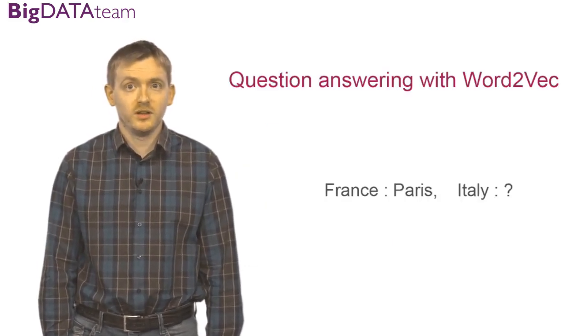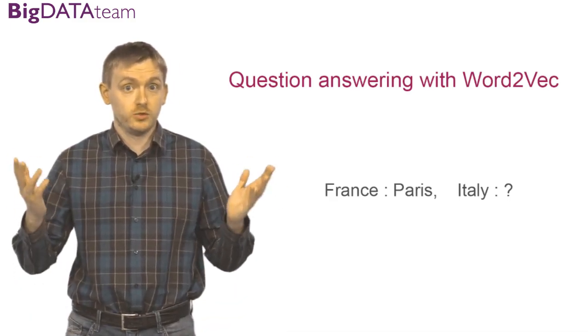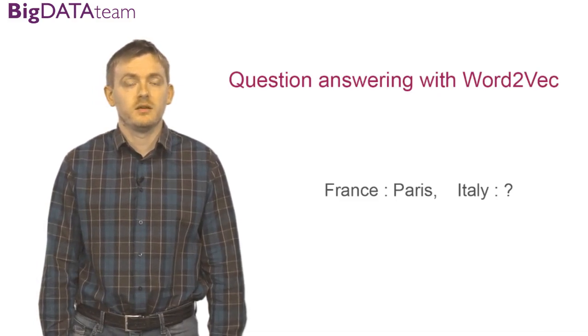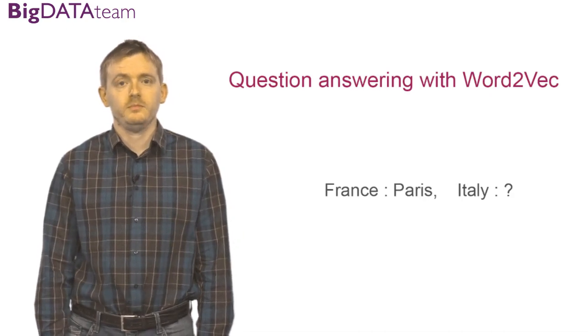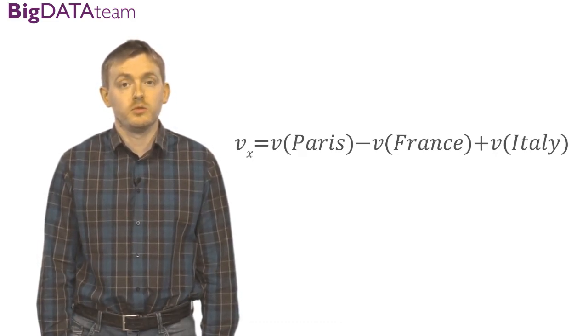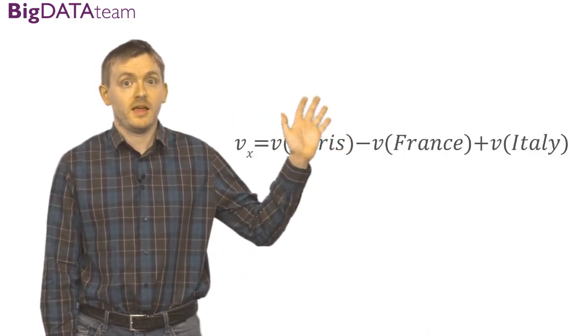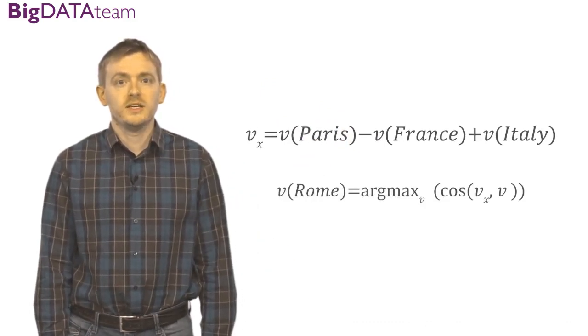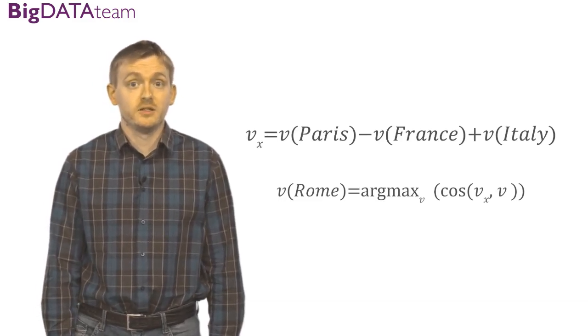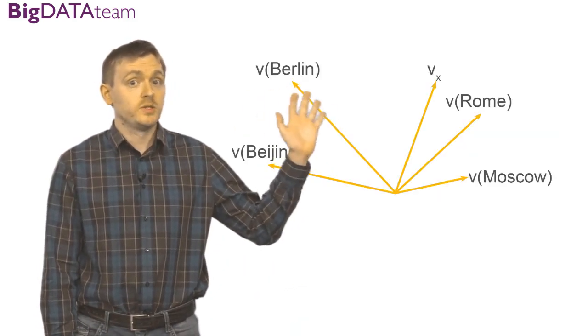With the Word2Vec model you can do question answering. If Paris is related to France, what word is related to Italy? Everyone can solve this simple quiz—the answer is Rome. It turns out that the Word2Vec model can solve it too. You can take the vector associated with the word Paris, subtract the vector associated with the word France, and add the vector associated with the word Italy. Let us denote this obtained vector Vx. This vector is very similar to the vector which is associated with the word Rome. Of course, Vx is not exactly Rome, but it is the closest vector among the others. And here is a visualization of such idea.